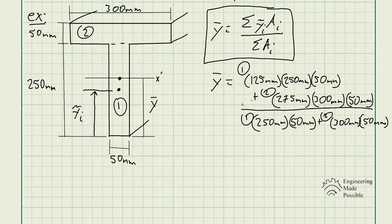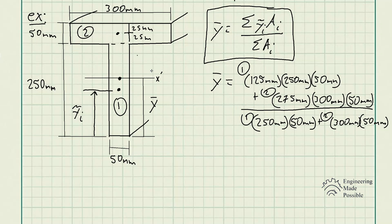For area number two, we have the length being 300 millimeters with a width of 50 millimeters, so the area is 300 times 50. The centroid of this rectangle is located at half of 50, which is 25 millimeters. But we need the distance from the bottom of the T-beam all the way up to that centroid, so that's 250 millimeters plus 25, giving us 275 millimeters times the area, all divided by the sum of the cross-sectional areas of both rectangles.